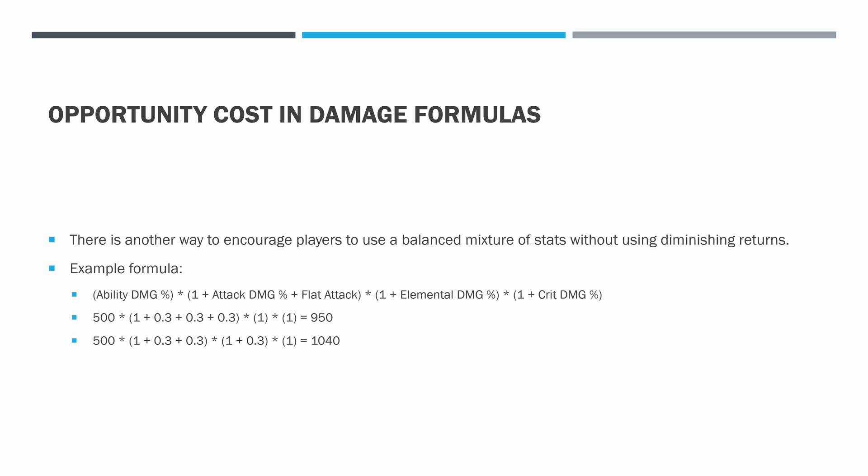So let's take a look at the formula we're actually going to use in our game. We've got ability damage percent — each ability has some kind of base multiplier. Then you do one plus attack damage percent, where equipment has either attack percent or flat attack. Then we multiply by one plus elemental damage percent — so if you do ice damage you'd want a matching elemental damage percent on your equipment. Then we multiply by crit damage at the end. In these formulas I'm assuming it's not a crit, so I'm multiplying by 1. But if it were a crit with a crit damage multiplier of 75%, it would be 1.75.